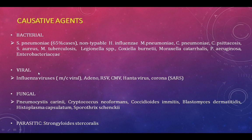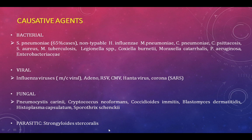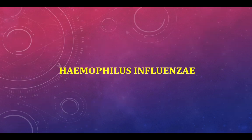Important distinction: influenza virus is NOT the same as Haemophilus influenzae — influenza viruses are viruses, while Haemophilus influenzae is a bacterium. Viral causes of pneumonia include influenza virus, adenovirus, respiratory syncytial virus, SARS-CoV-2, MERS, and other SARS variants. Fungal causes include Cryptococcus, Histoplasma, Sporothrix, and Coccidioides. Parasitic causes include Strongyloides stercoralis.